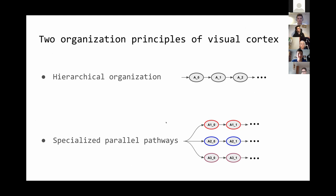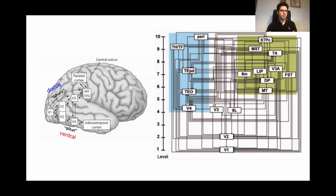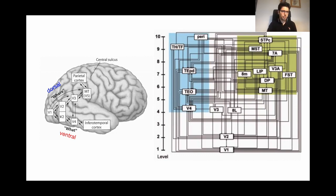There are two organization principles of visual cortex: one is the hierarchical organization and the other is specialized parallel pathways. If you look at the human visual system as shown in this schematic, there are at least two parallel pathways. One is the ventral or 'what' pathway, which is responsible for object categorization, face recognition, scene discrimination, and so on. Then there is the dorsal or 'where' pathway, which is in charge of processing visual input for guiding actions, following moving objects, and perceiving motion.